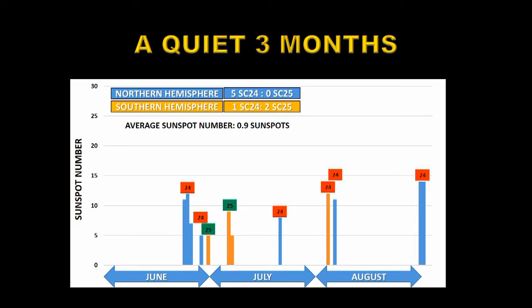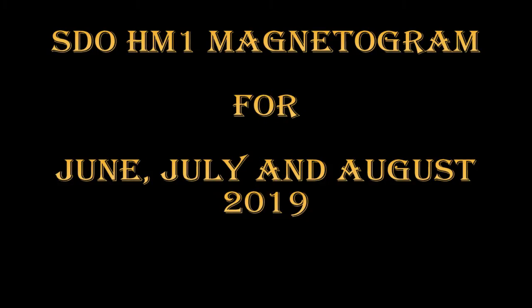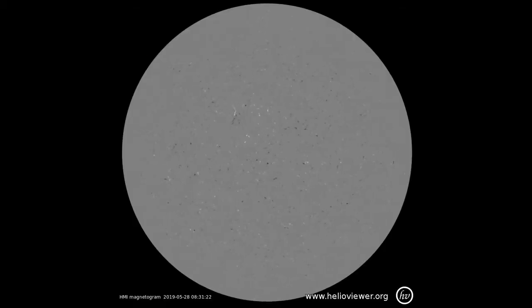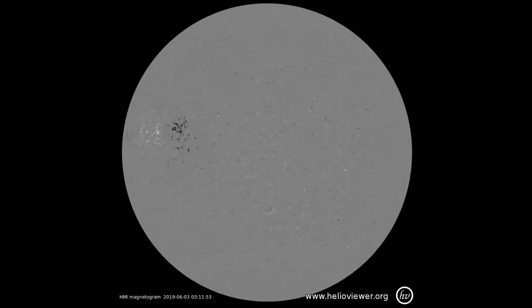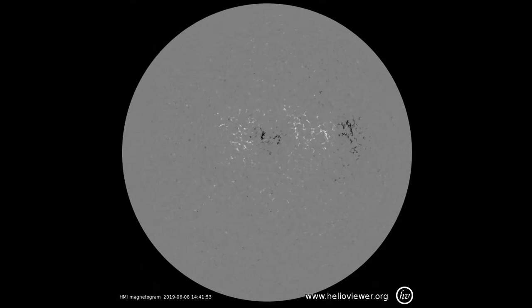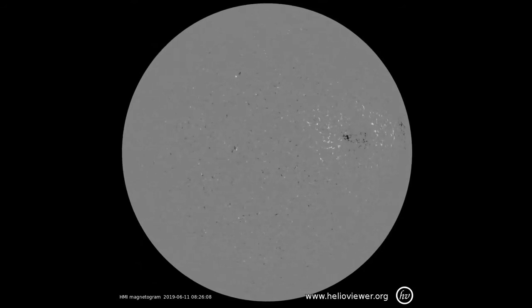During this time the average sunspot number has been 0.9 sunspots per day, which is very much consistent with low values from previous solar minima. Now I'm going to show you some movies of what's going on on the Sun over this last three month period. I'm going to show you magnetograms rather than sunspot pictures because it's actually clearer to see the magnetic fields in the magnetograms. You may well miss them when the movie is moving this fast.